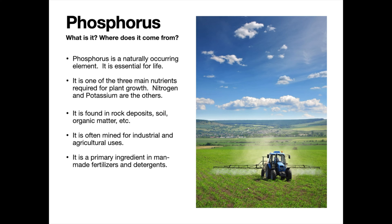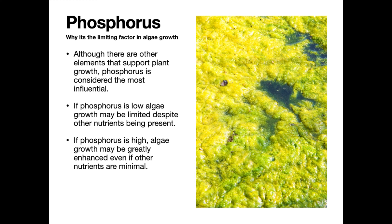Phosphorus is found in nature in rock deposits, in the soil, in organic matter — many, many places. In our modern life we see phosphorus used in industrial settings and in agriculture, and it is mined for those purposes. It's a primary ingredient in man-made fertilizers and things like detergents.